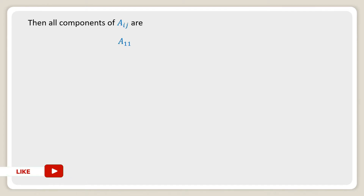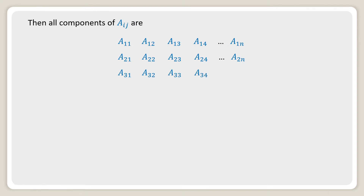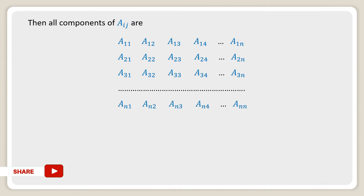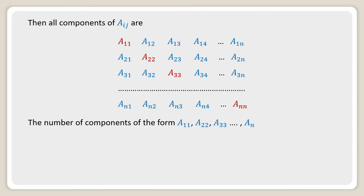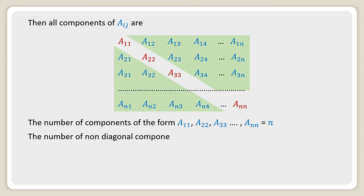All components of a_ij are arranged as a matrix: a11, a12, a13, ... a1n in the first row; a21, a22, a23, ... a2n in the second row; and so on up to an1, an2, an3, ... ann in the last row. The number of diagonal components of the form a11, a22, a33, ... ann equals n. The number of non-diagonal components where i is not equal to j equals n squared minus n.